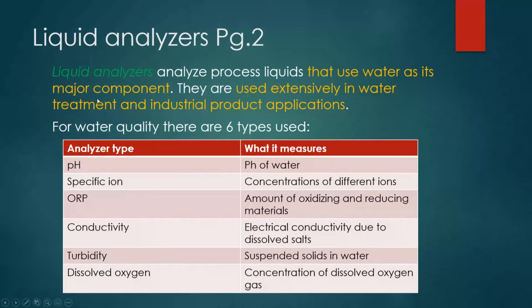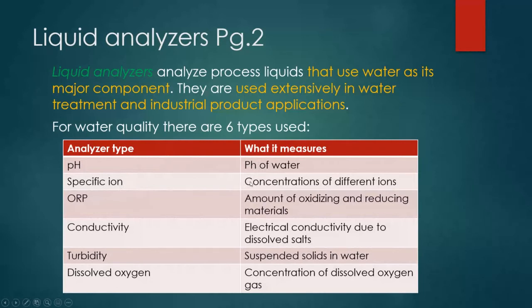When analyzing for water quality, we use six different types of analyzers, and these are the six types covered in the three ILMs for liquid analyzers. We have pH, which measures the acidity or alkalinity of water. We have specific ion analyzers, which are designed to measure specific types of ions. A common example in drinking water is fluoride — we add fluoride to our drinking water, so we would have a fluoride-specific ion analyzer to measure its concentration.